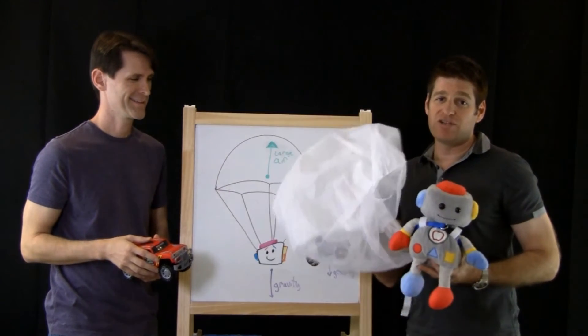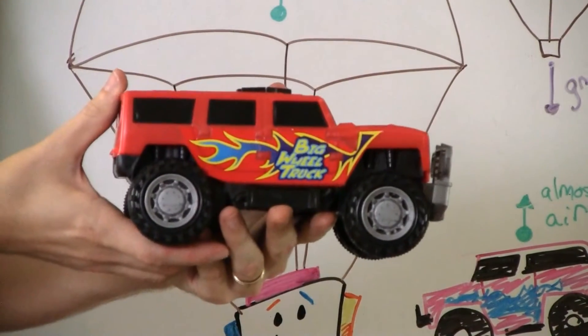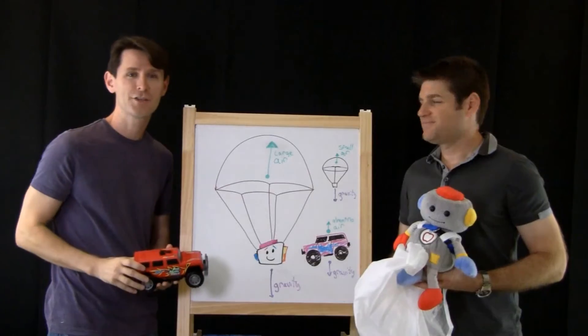So our trobo wants to be safe. He wants to use a parachute. Our monster truck: I don't need no stinking parachute! Let's go check it out.